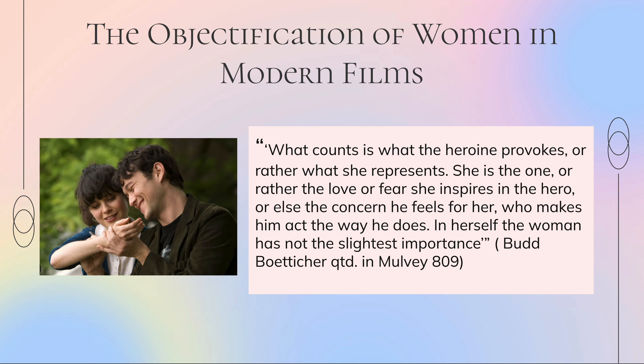Over time, as modern society and cinema have evolved, this type of obvious blatant objectification like the one in Psycho has transformed into something less obvious but just as problematic — how female characters are being developed and portrayed in film. In modern cinema, female characters are often used as plot devices to serve the male protagonist's character development, rather than having their own storylines, agency, or power in the films they appear in.